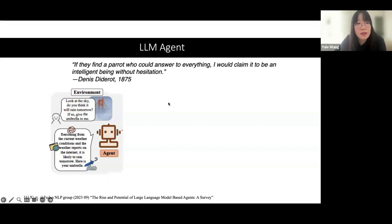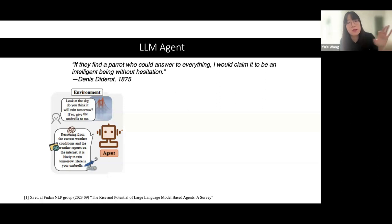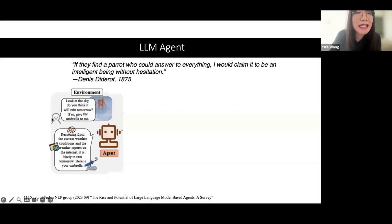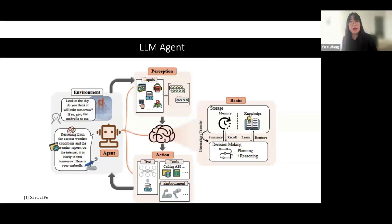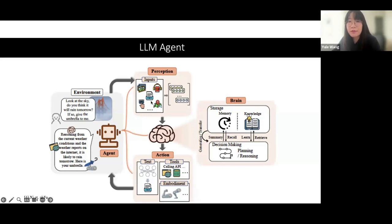So then it goes to how to define an agent and how to define an LLM agent. For example, someone asks: look at the sky, do you think it will rain tomorrow? And an LLM agent will provide an answer — you need to bring an umbrella, and where the umbrella is. This is the LLM agent, and this person is the environment because the LLM agent is a self-thinking agent, and this person is interacting with it. For an LLM agent, the perception is quite limited — it can only understand textual inputs. But with textual inputs, it can already solve a lot of complex problems using its brain.